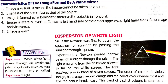When you stand in front of a mirror, what are the characteristics of the image formed? First, the image is virtual — it does not appear on a screen; it forms inside the mirror. Second, the image is the same size as you. So the image formed in a plane mirror is the same size as the object.